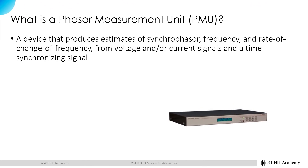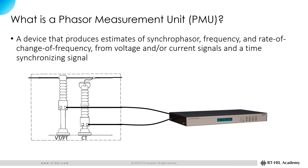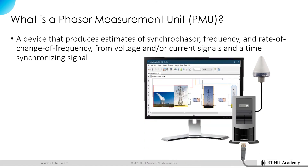A PMU is a device that produces estimates of synchrophasor, frequency, and rate of change of frequency from voltage and current signals and a time synchronizing signal. The estimated quantities are time-stamped using the precise time provided by GPS signals, and then streamed into communication networks. The PMU functionality is embedded in most real-time simulators, so they can be configured to compute synchrophasors out of simulated voltage and current waveforms, time-stamp them, and stream them into communication networks. Now it is time to have a closer look at the IEEE C37.118.2 communication protocol.